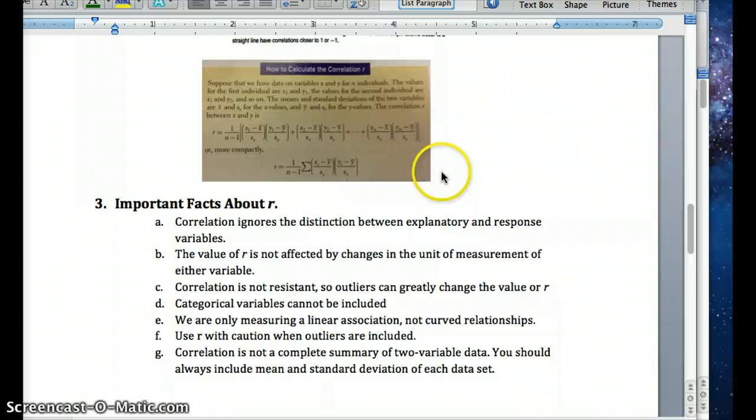So correlation, it's not necessarily telling us which one's explanatory and which one's the response. For example, we could have switched it up, and we could find a strong correlation, but that doesn't mean that whatever we put on the x-axis is causing the change in the y-axis. It could be the other way around. Like we could have our dependent variable on the x-axis and the independent on the y.